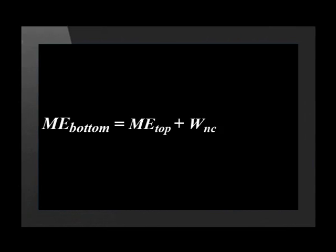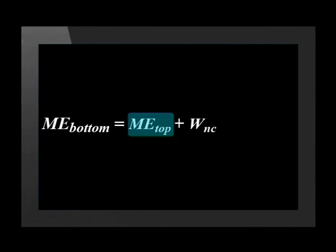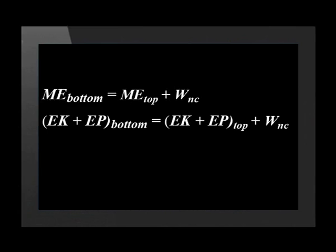Before we solve this problem, let us see how this formula was derived. We take the principle of conservation of mechanical energy and add the work done by the non-conservative force to the initial mechanical energy — that is, the mechanical energy at the top before the ball was dropped from 15 meters. Because mechanical energy is not conserved when non-conservative forces are present, but the total energy of the system must still be conserved, resolving this equation gives us: work done by a non-conservative force equals change in kinetic energy plus change in potential energy.